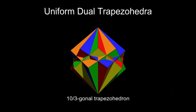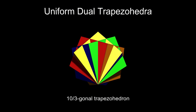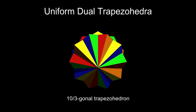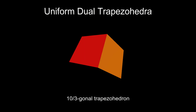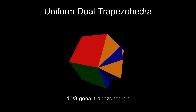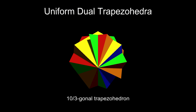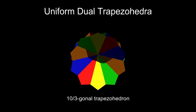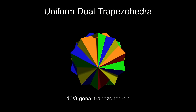To understand how they're put together, I'll assemble this 10/3-gonal trapezohedron one face at a time. The faces are kite shapes, 10 of which surround a vertex. They encircle the vertex three times, each face intersecting four other faces. This forms an open bowl shape, which joins with the second bowl, completing the trapezohedron.